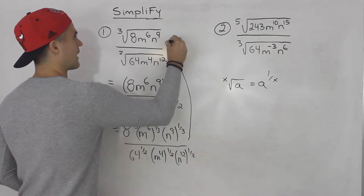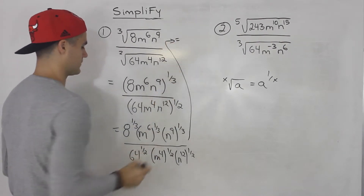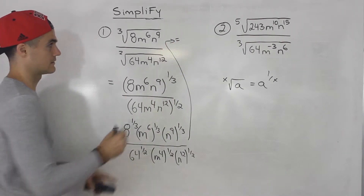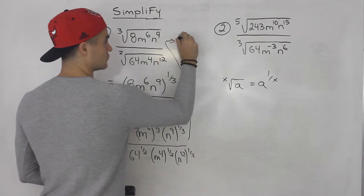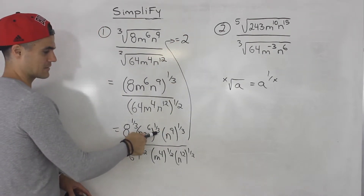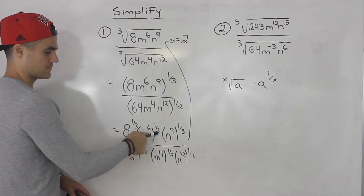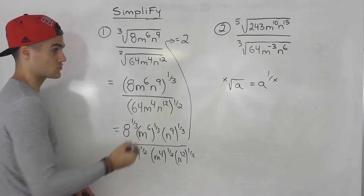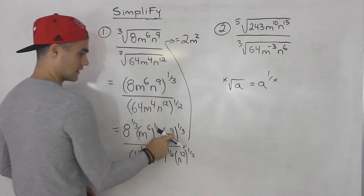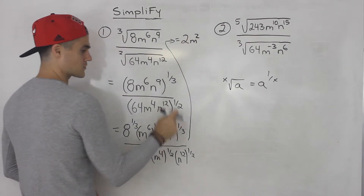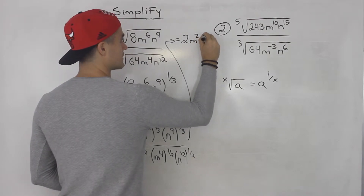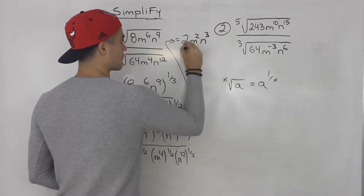So bringing that up: 8 to the power of 1 over 3 — that's just 2, the third root of 8. Then 6 times 1 over 3 gives us 2, so this would be m squared. And 9 times 1 over 3 gives us 3, so that will be n to the power of 3.